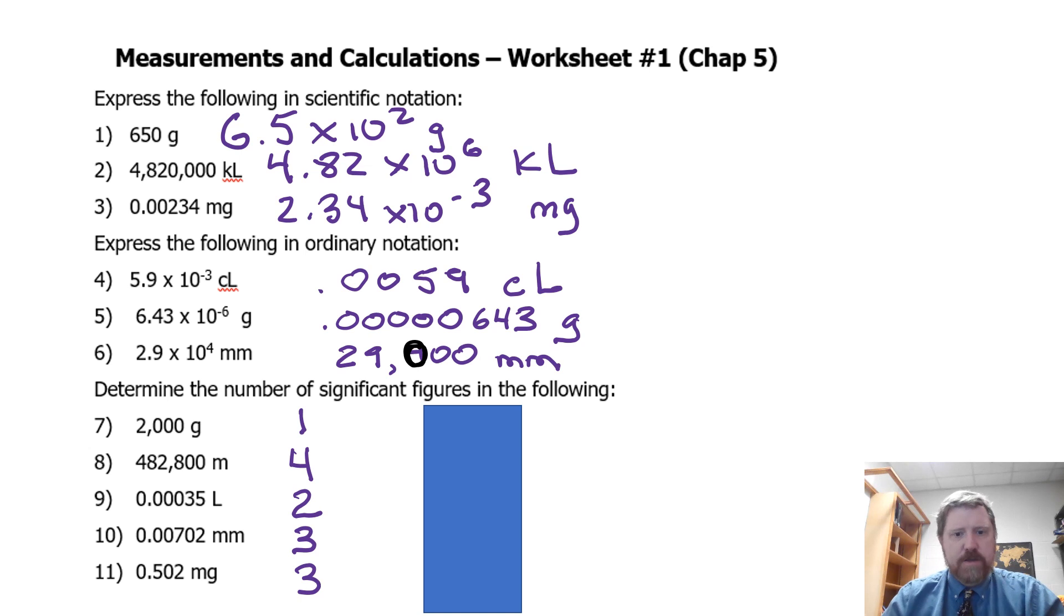When we are doing significant figures in the notes, we wrote L, O, and R: left, trapped zeros, and right zeros. Lefty zeros are never counted. Number 7, those are examples of righty zeros. They are only counted when there's a decimal, and there isn't one. So that's only one significant figure. Same thing in number 8. The 4, 8, 2, 8 are all sig figs, but the two zeros are not. Number 9, we have a bunch of lefty zeros, and lefties never count. So that's just the two sig figs, the three and the five. Number 10, we have lefties and a trapped. The lefties don't count, but the trap does. That's why we have three.